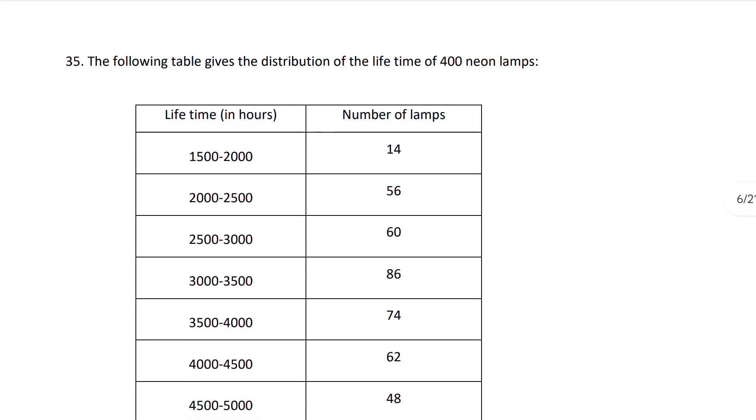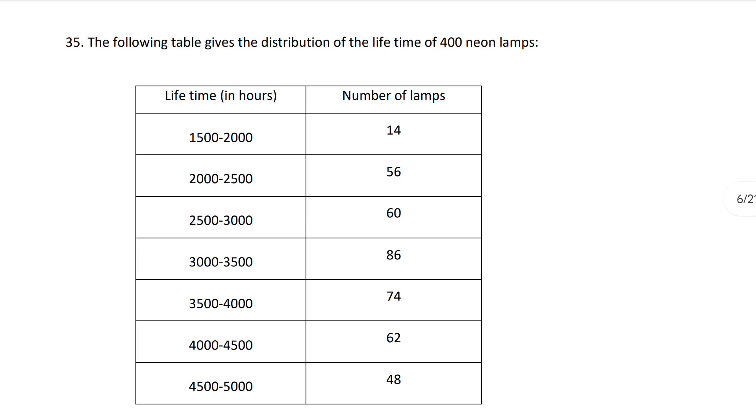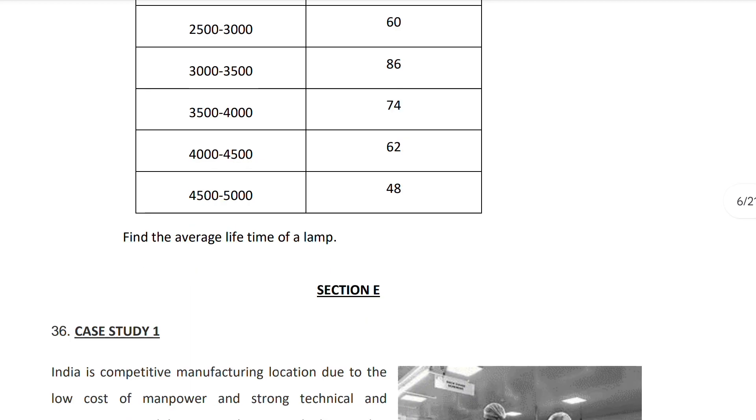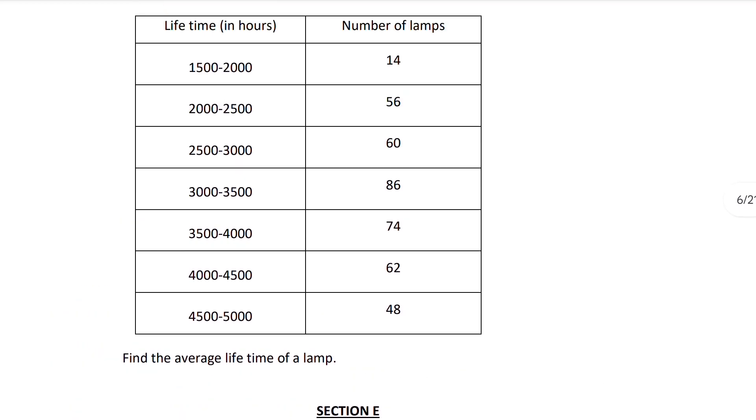Then see question 35. The following table gives the distribution of the lifetime of 400 nano lamps. Find the average life of a lamp. If you know the mean, median and mode, then you can find it. This is related to the mean, median, mode chapter.